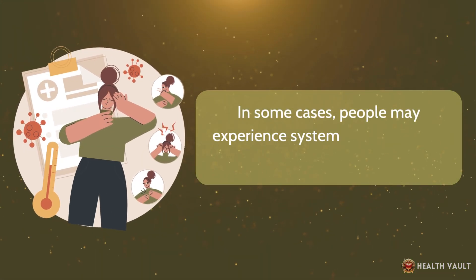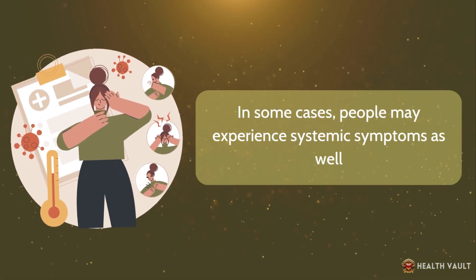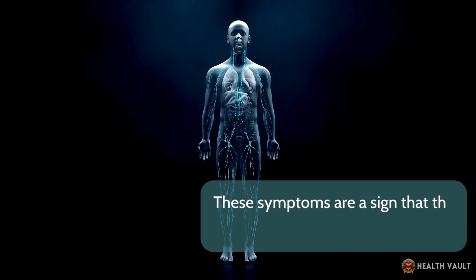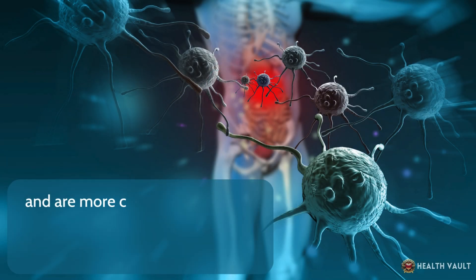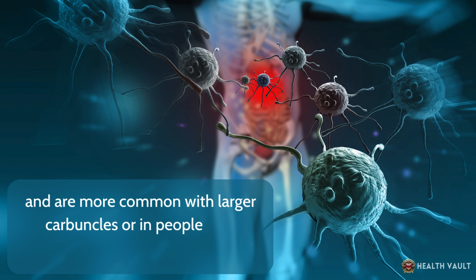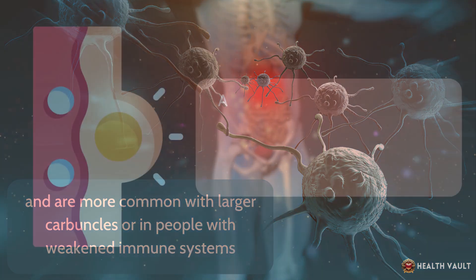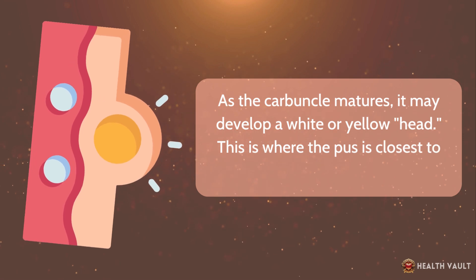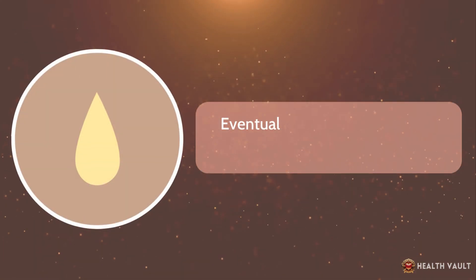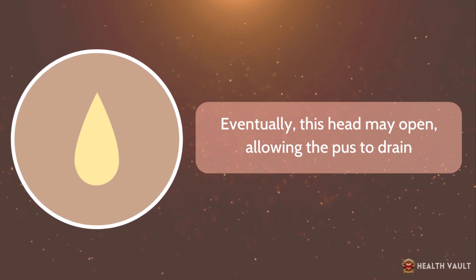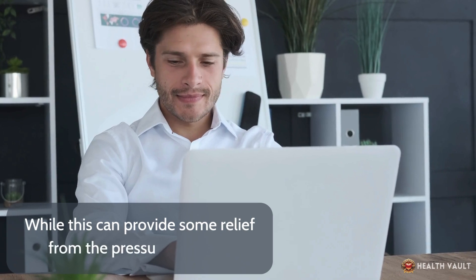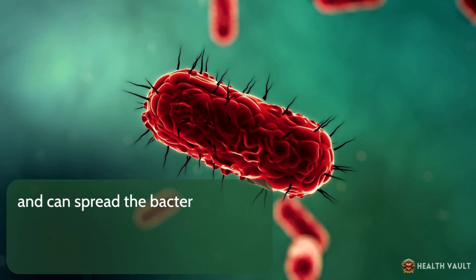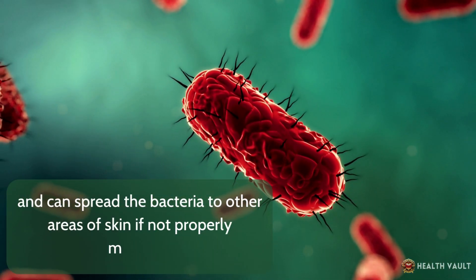In some cases, people may experience systemic symptoms as well, including fever, chills, and a general feeling of being unwell. These symptoms are a sign that the body is fighting the infection and are more common with larger carbuncles or in people with weakened immune systems. As the carbuncle matures, it may develop a white or yellow head where the pus is closest to the surface. Eventually, this head may open, allowing the pus to drain — though the drainage is highly infectious and can spread bacteria to other areas of skin if not properly managed.